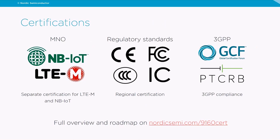There are different certification types: some operators like Verizon and Vodafone have their own certifications, but many operators only require GCF and PTCRB certifications, which confirm the device operates according to the standard. Additionally, there are regulatory certifications for all wireless devices in different regions. The NRF9160 supports more than 17 bands and holds certifications across all these categories — details are available via the link on the slide.